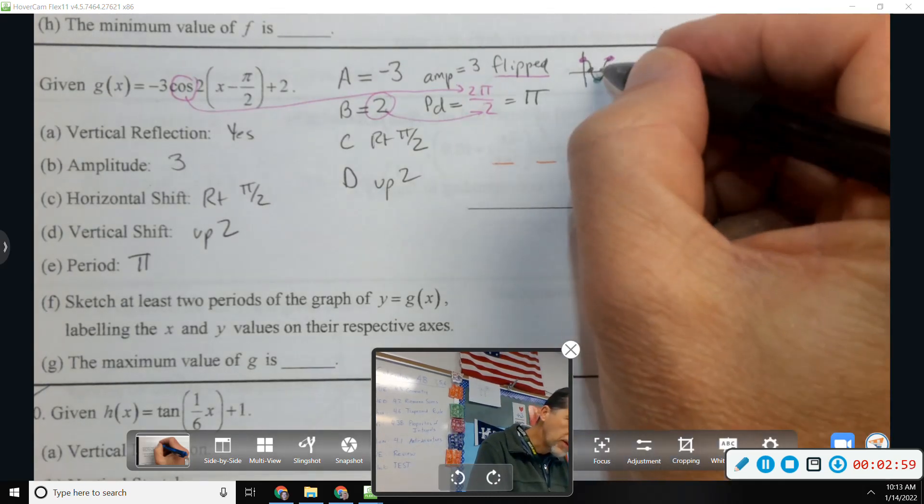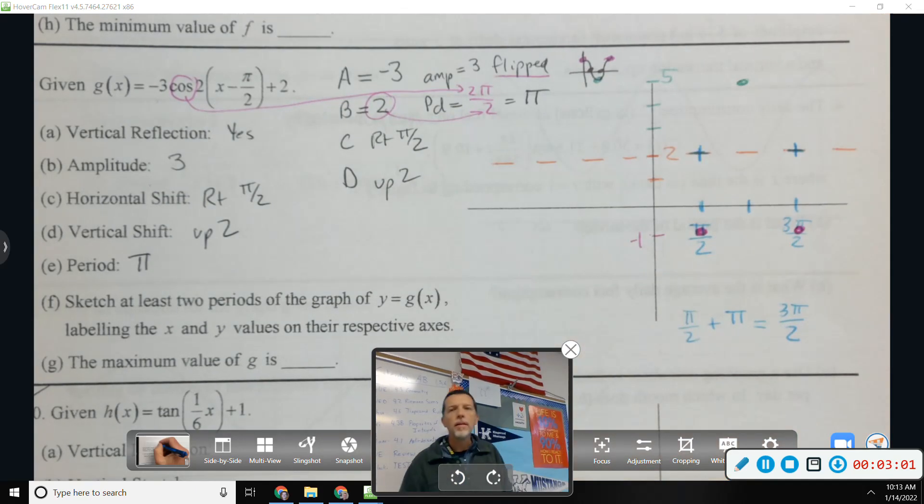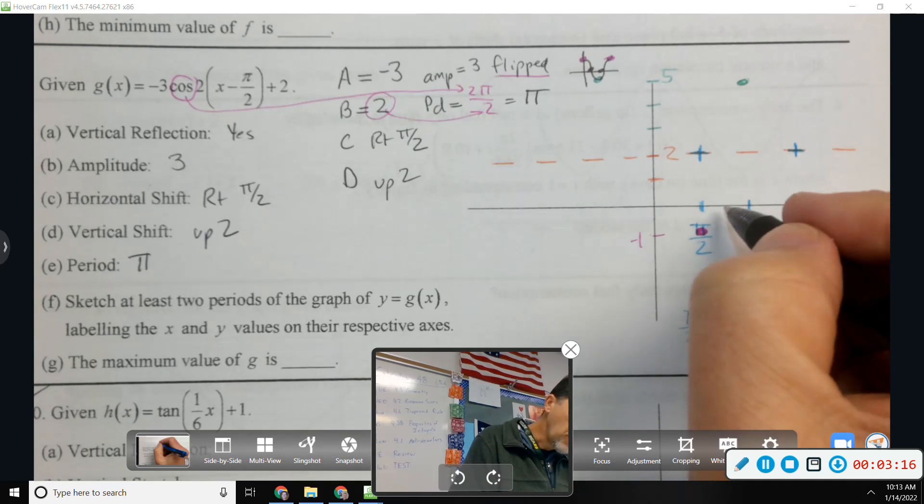And what about halfway between the max and the min? What's going on there? Is that a max or min or a zero? A zero, although when we say zero, what do we really mean? A midline. I guess I should just start calling it that. Max, min, or midline? All my m's.